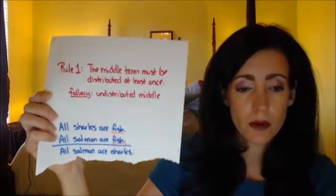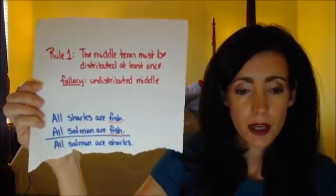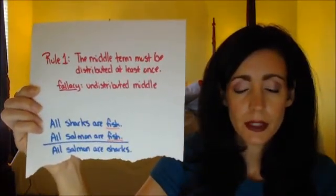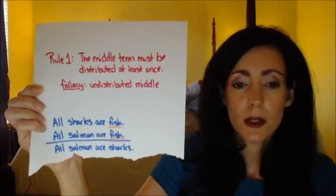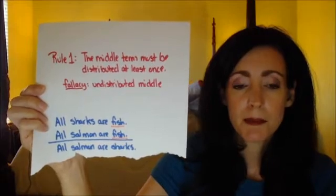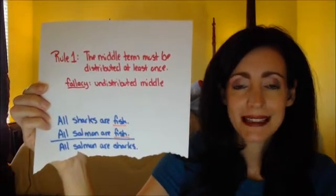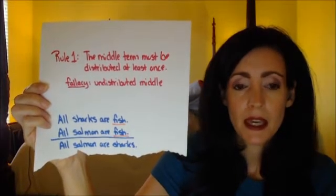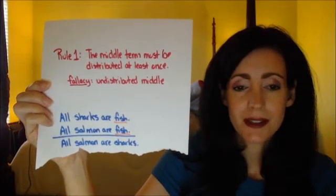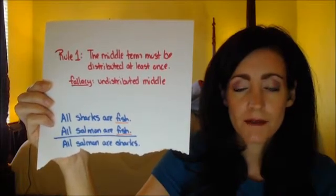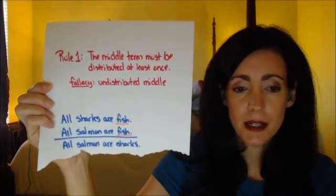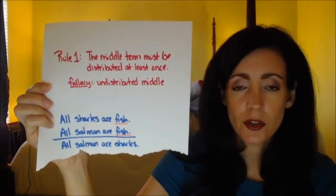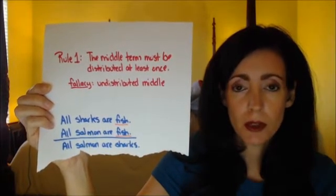Let's move on to the first rule. The first rule is: the middle term must be distributed at least once. If the term is not distributed at least once, the fallacy committed is the undistributed middle.